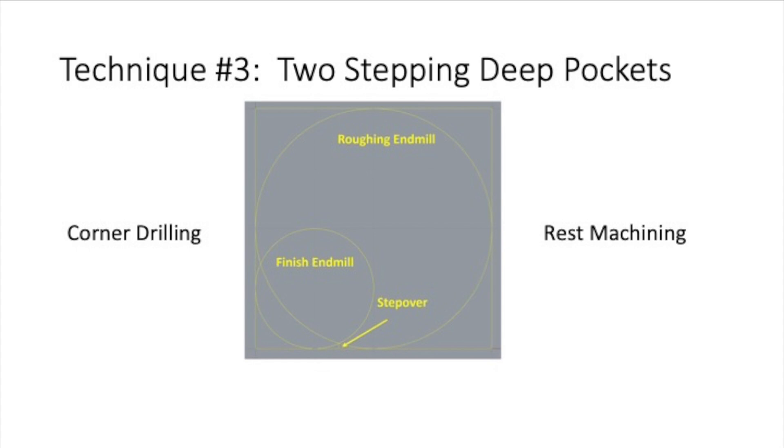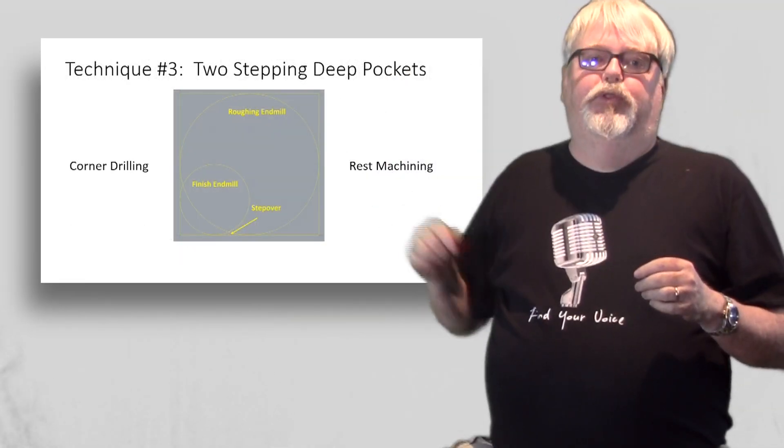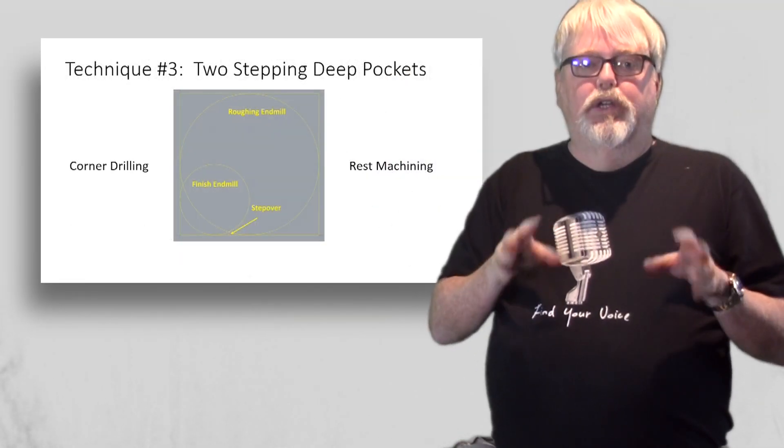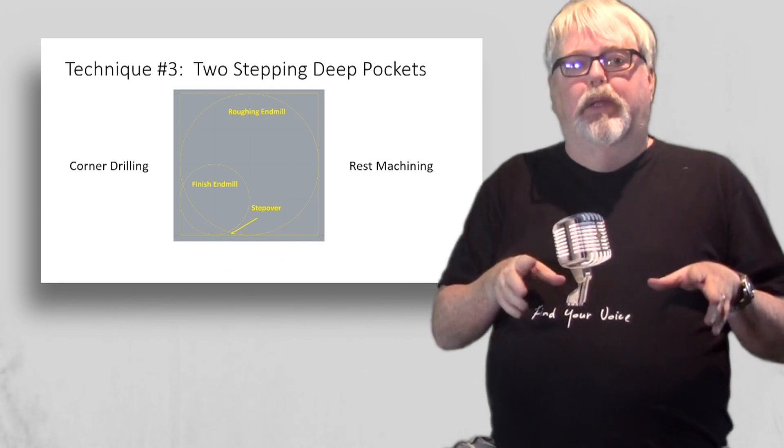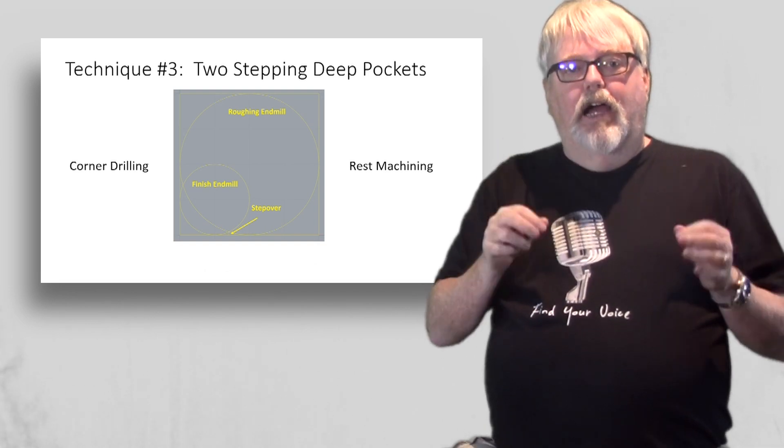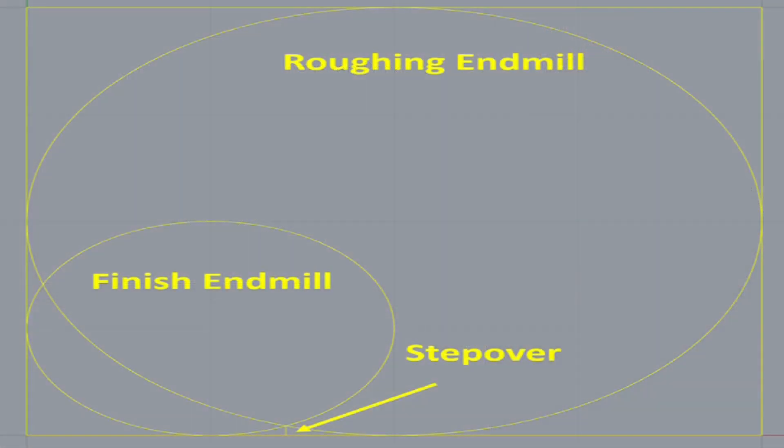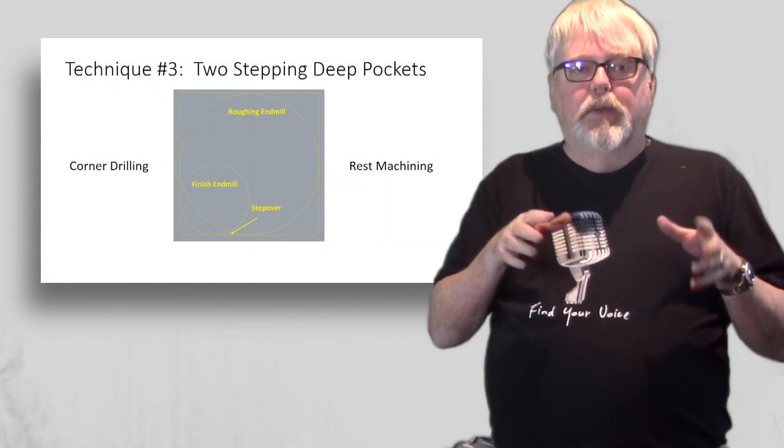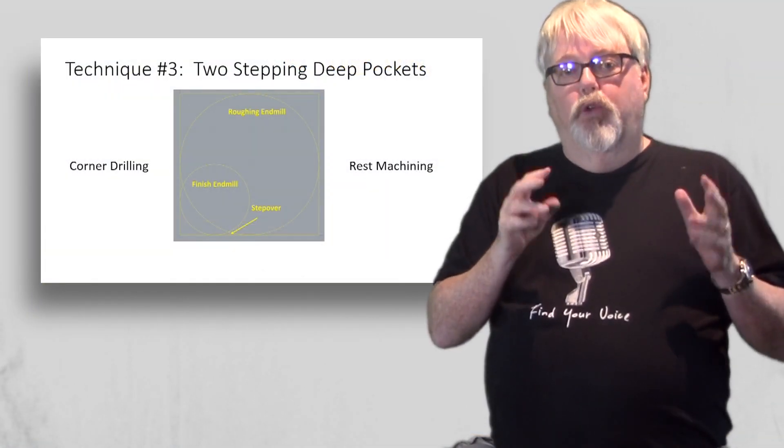Technique number three is to work the pocket in two steps. The initial pass is done with a much larger tool that is plenty rigid enough to go down as deep as it needs to. After removing most of the material with the larger tool, a smaller finished tool that fits into the corners and tight spaces is used to clean up. Typically, this can make the smaller tool's job easier.